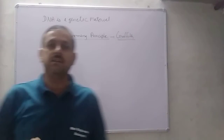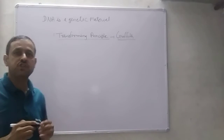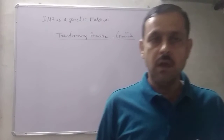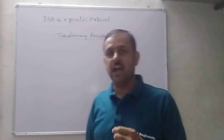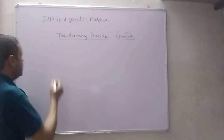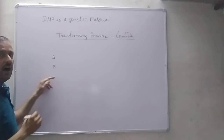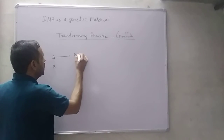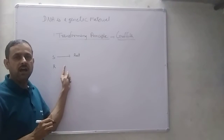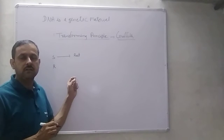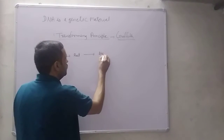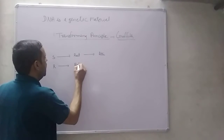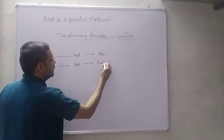Griffith's transforming principle क्या है - इसको समझिए। Streptococcus pneumoniae - ये bacteria हैं जो rats में disease spread करते हैं। Griffith ने दो types of bacteria लिए - one is S (smooth) and second is R (rough). Whenever he injected S smooth bacteria in rat, it caused virulent disease and the rat would die. But whenever he injected R rough bacteria in rat, the rats did not die - they survived।